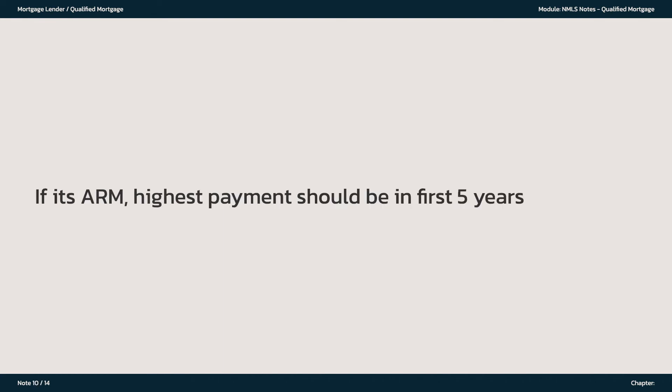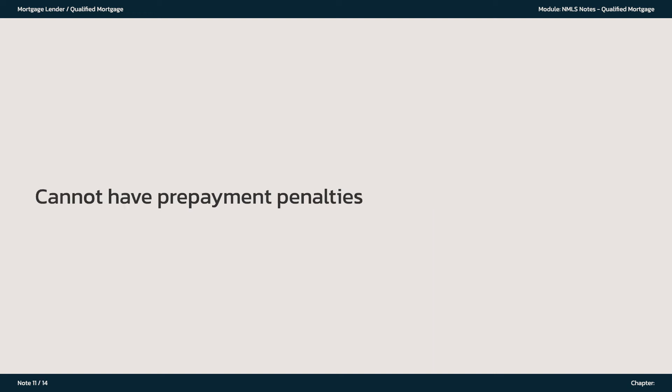If it's an ARM, the highest payment should be in the first 5 years. Cannot have prepayment penalties.